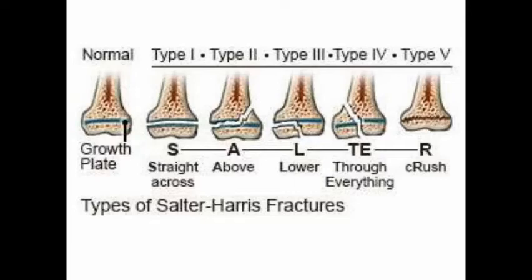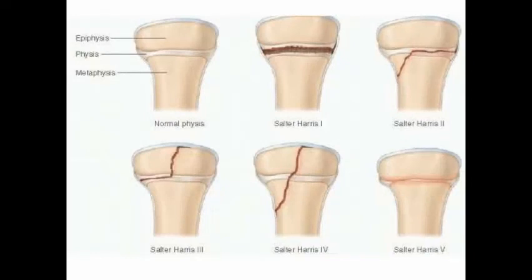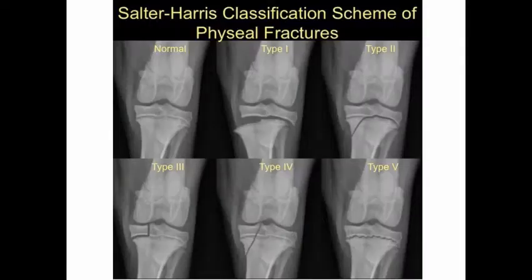Here is the easiest way to remember the Salter-Harris classification. The first picture shows the normal growth plate. In Type 1, there is a fracture straight across the growth plate. Type 2 is above the growth plate. Type 3 is lower to the growth plate. Type 4 is through everything. Type 5 is a crush injury. You can remember this from the letters of the word SALTER, where the second letter R corresponds to Type 5. The epiphysis, physis, and metaphysis are seen clearly, with fractures through the physis, through the physis and epiphysis, through everything, and a crush injury respectively.